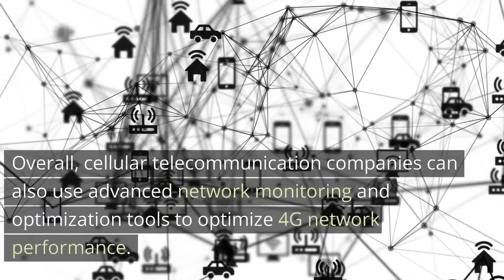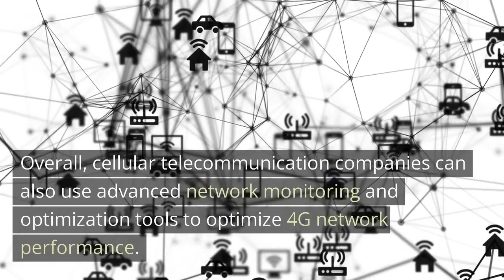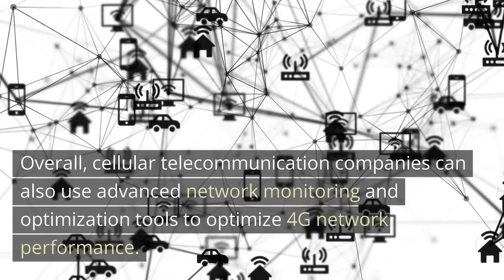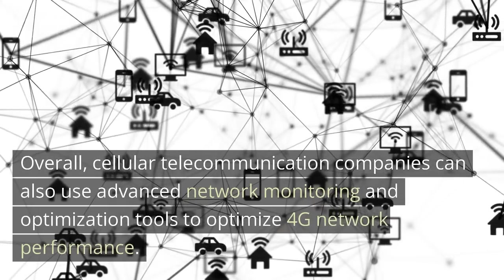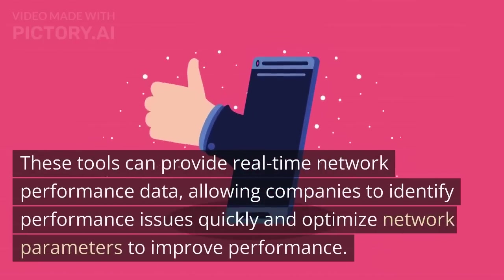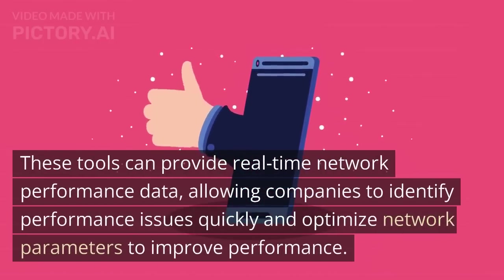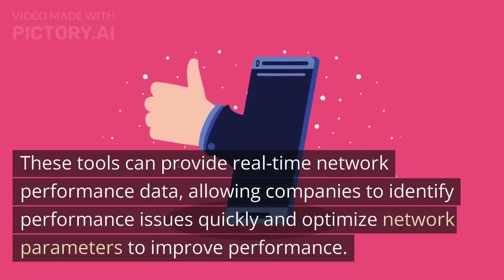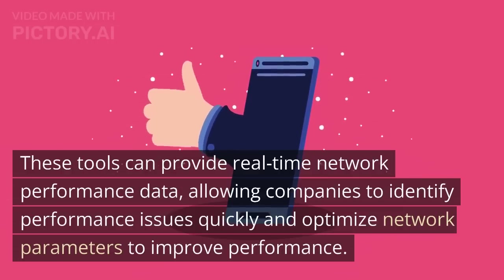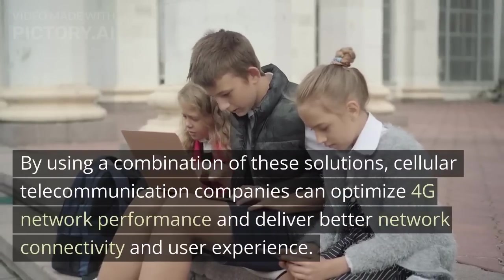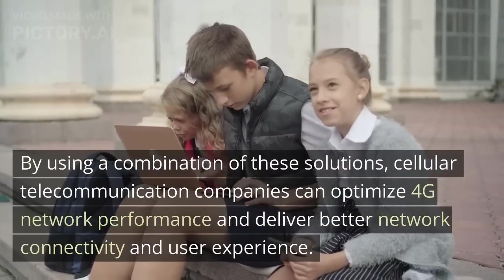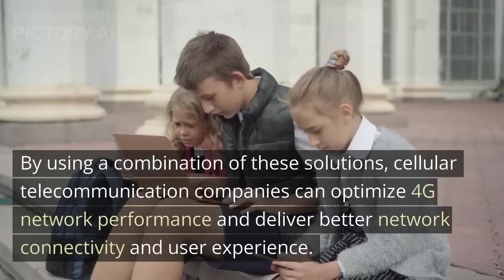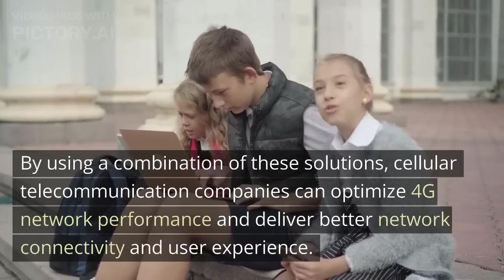Overall, cellular telecommunication companies can also use advanced network monitoring and optimization tools to optimize 4G network performance. These tools can provide real-time network performance data, allowing telecommunication companies to identify performance issues quickly and optimize network parameters to improve performance. By using a combination of these solutions, cellular telecommunication companies can optimize 4G network performance and deliver better network connectivity and user experience.